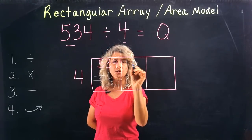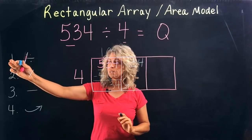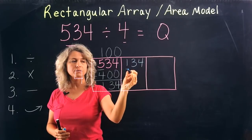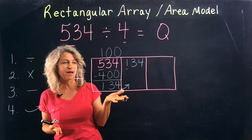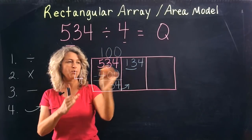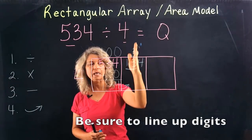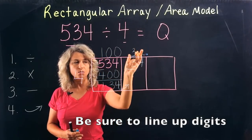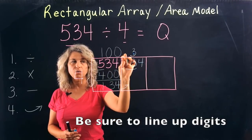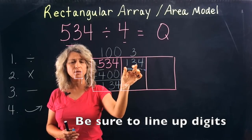Step four: bring over. You're going to bring over the 134 and repeat back to the beginning with step one again. How many times will 4 fit into 1? None. But 4 can fit into 13 — three times. Notice that I'm lining up the 3 right in the tens place. I don't want to put it over here because 4 will not go into 1, but 4 will fit into 13, so it's very important that you line these digits up.